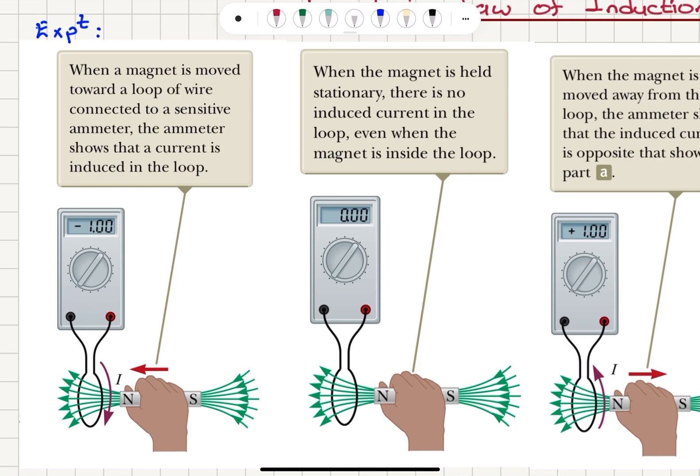What we see is that when the magnet is moved towards the loop of wire, which is connected to the sensitive ammeter, the ammeter shows that there is a current flowing in the loop.